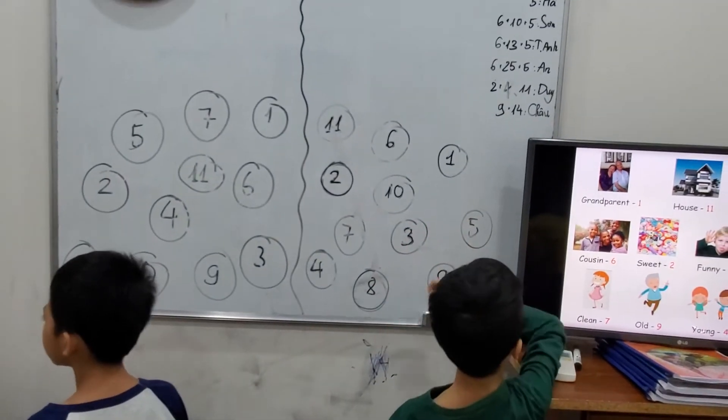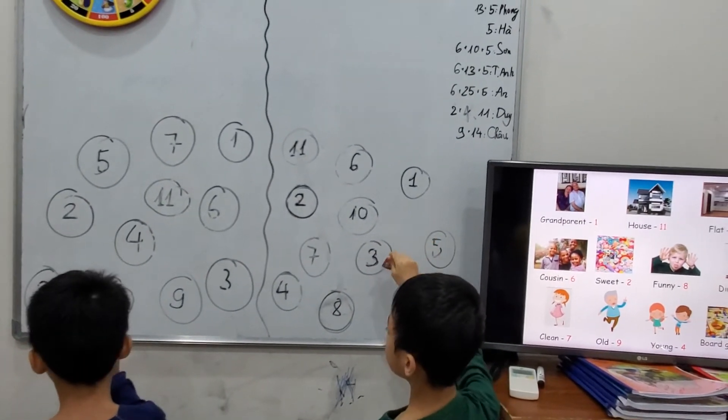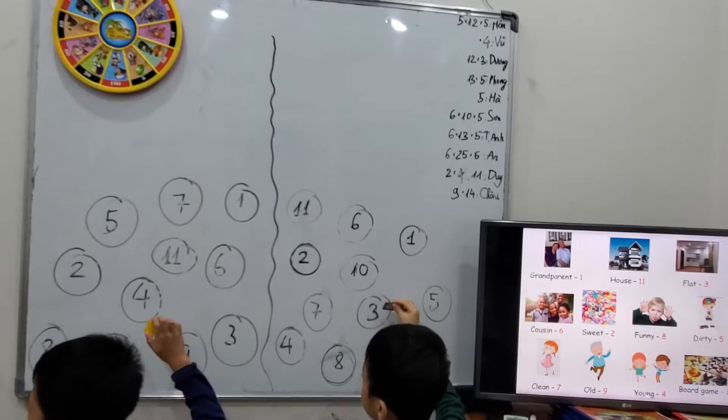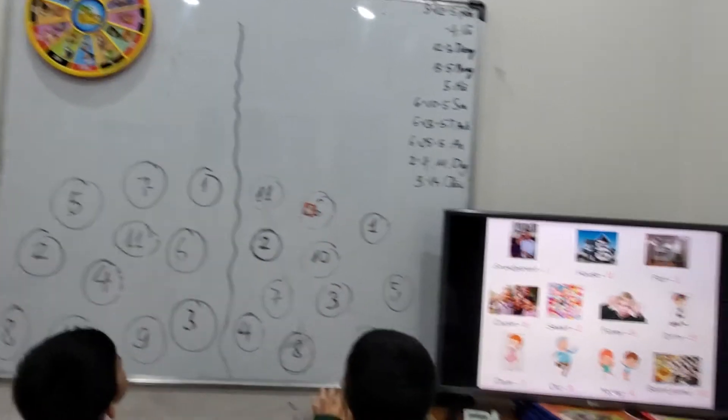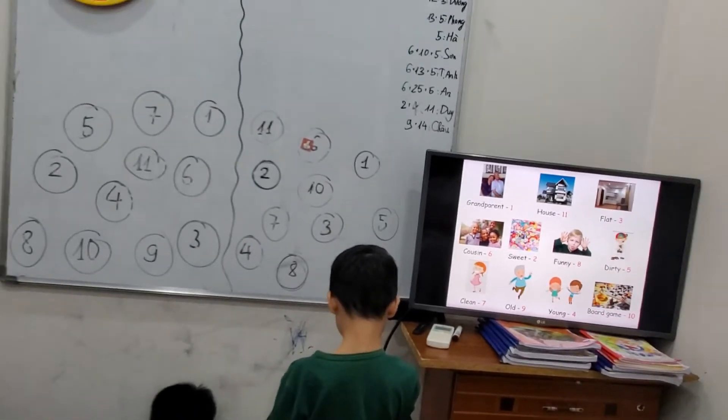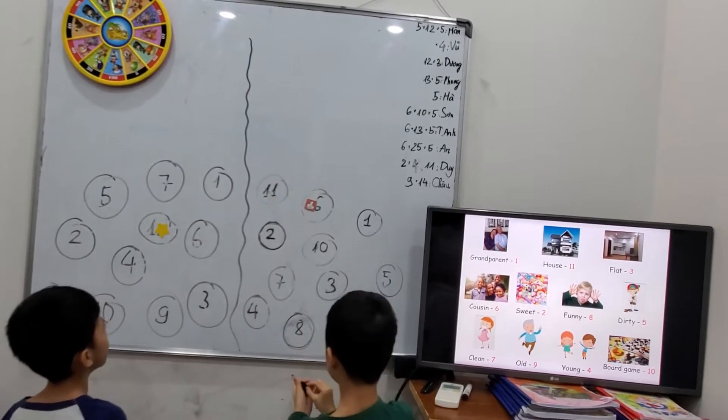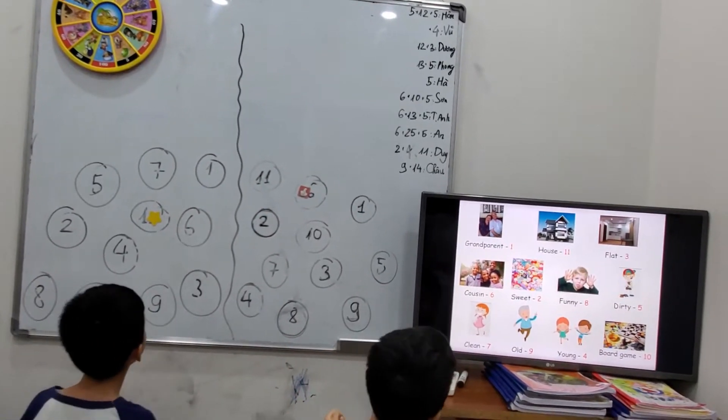Ready? Okay, try to stick first. I say that when you find the number... cousin, cousin, cousin. Cousin, where? Yeah, okay. Next one. Hey, where is house? House, house. Good. And then next one, flat.